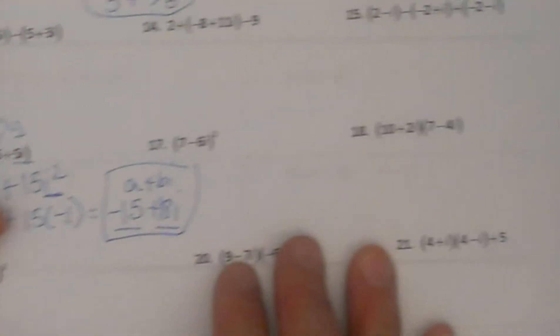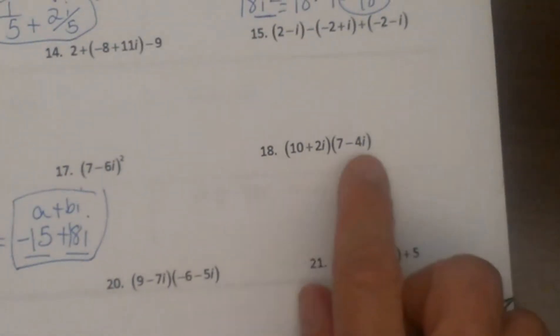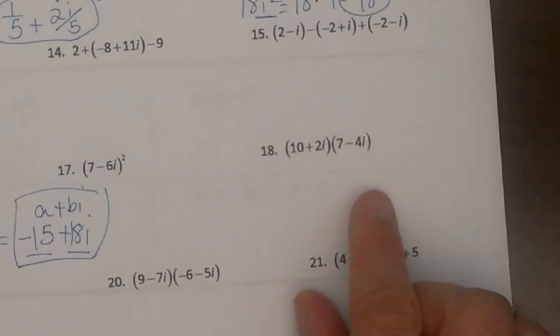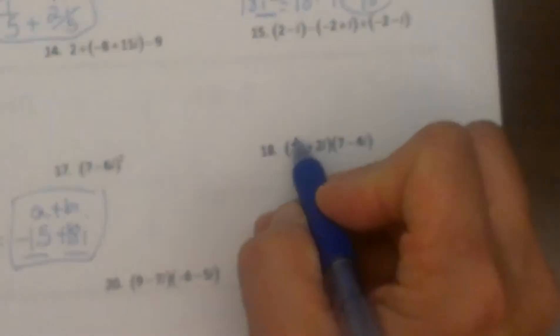Okay, let's try one where we are doing a binomial times a binomial. This is just like foiling, like x plus 2 times x plus 3. So we are just going to foil.